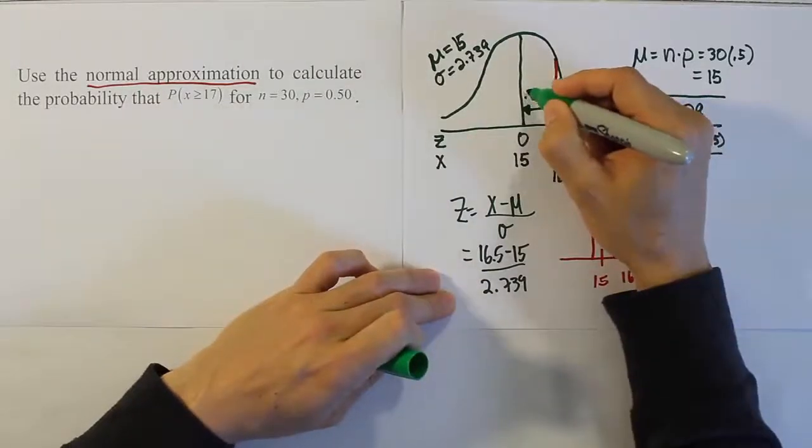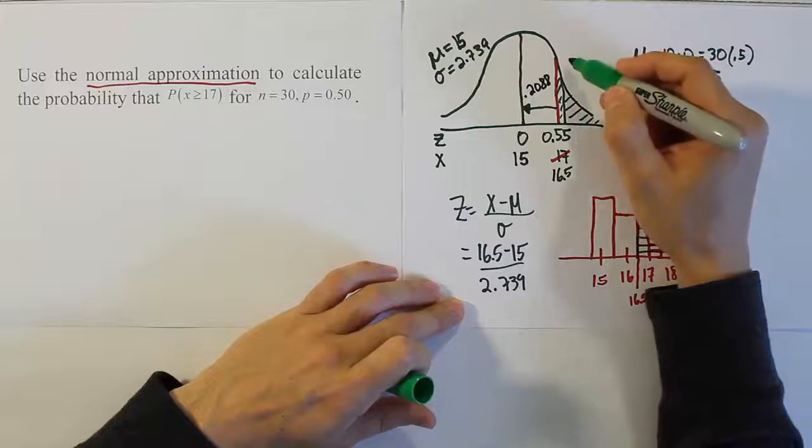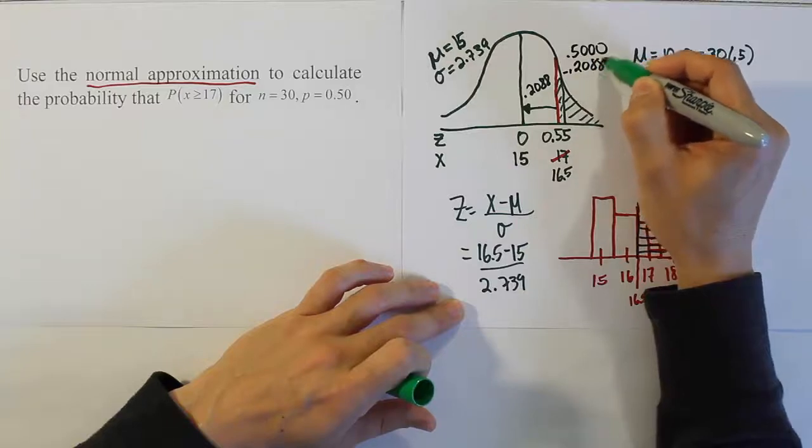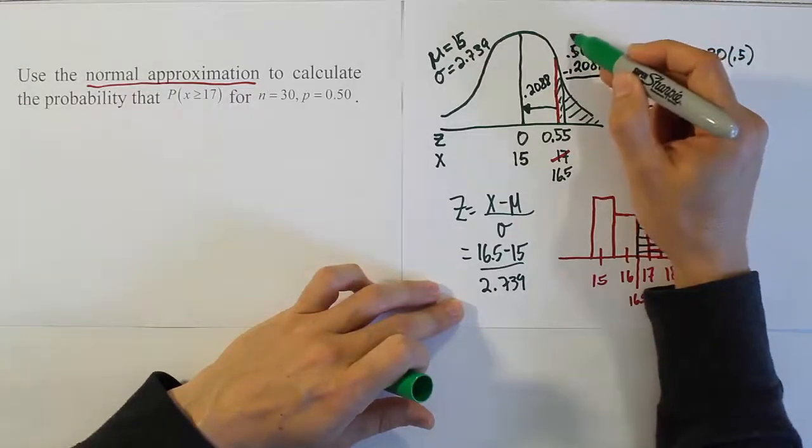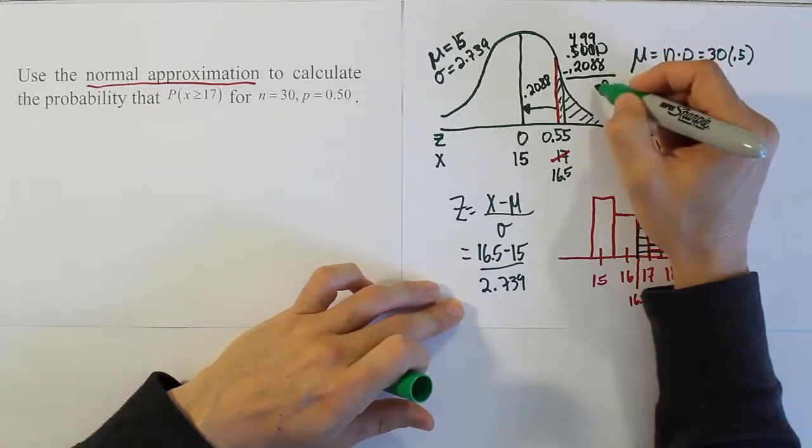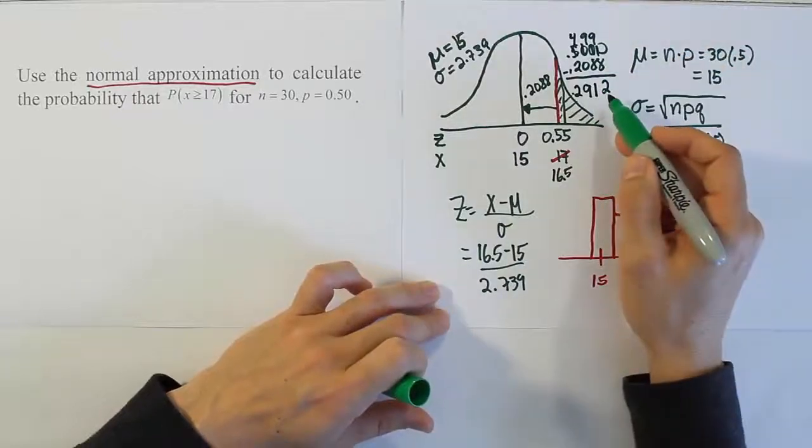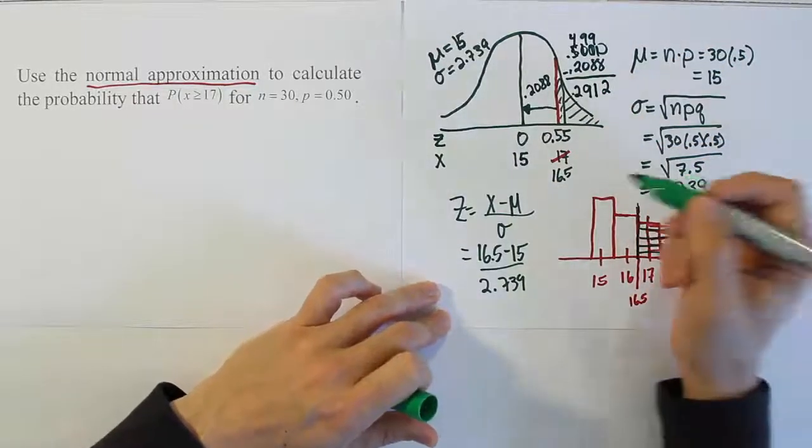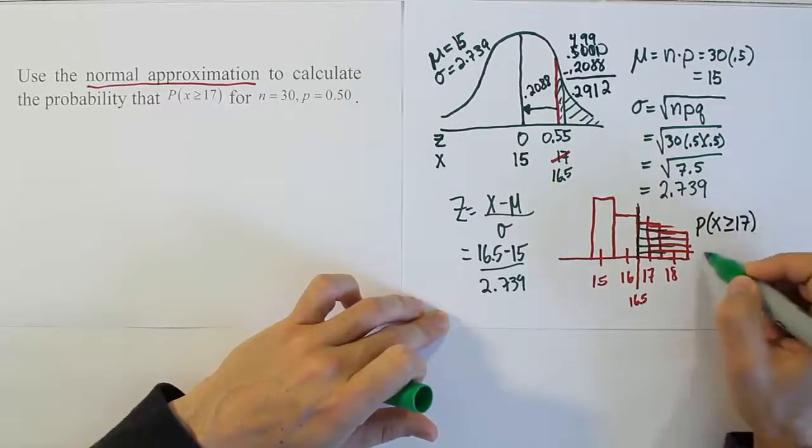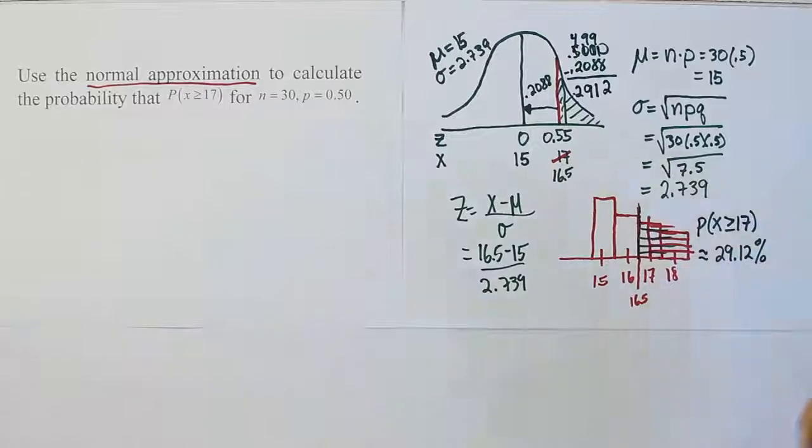Okay, so the answer was 0.2088 from our table. And we're going to take that value and subtract it from 0.5 to get the area in the tail. So we do 0.500 minus 0.2088. And when you do your subtraction, of course, you'll do some borrowing here. You get 10 minus 8 is 2. 9 minus 8 is 1. 9 minus 0 is 9. And 4 take away 2 is 2. So the answer is 29.12%. So the probability then, for our question, the probability that x is greater than or equal to 17 is approximately equal to 29.12%. And that's the answer you get using normal approximation.